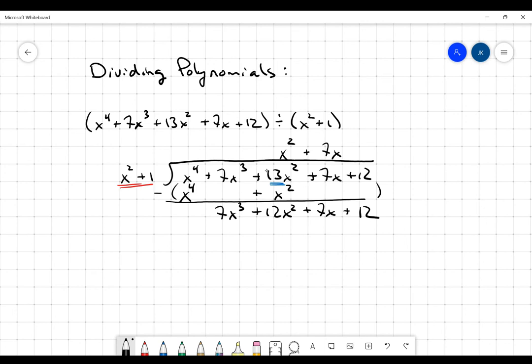I mean, if you're not sure, just take 7x cubed. Just take this first term here and divide it by the first term in my divisor.